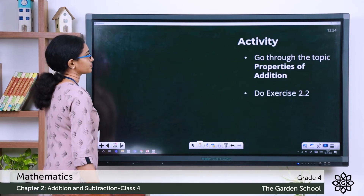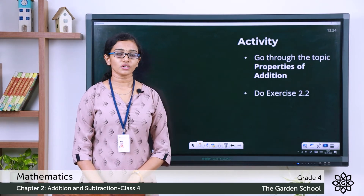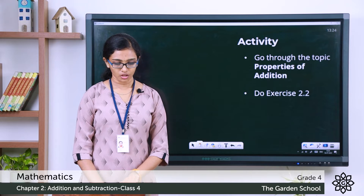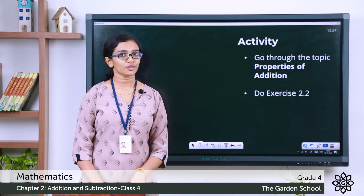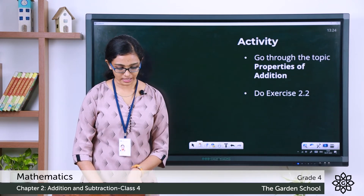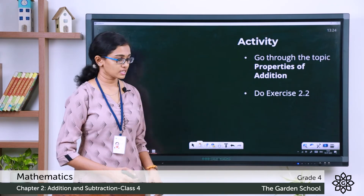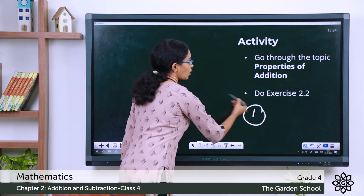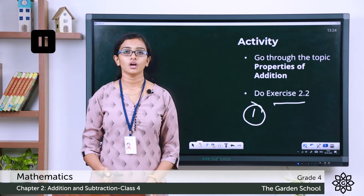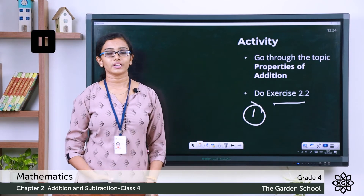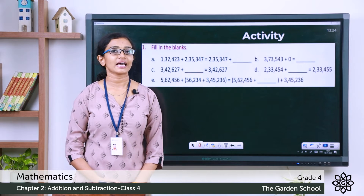Now all of you take your textbook and turn to page number 24. You can see the heading 'Properties of Addition' there. Please go through all the properties once and then do question number 1 of Exercise 2.2 in your textbook. You can pause the video, finish the activity, and come back. Hope you finished writing the answers — now let's check them.